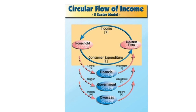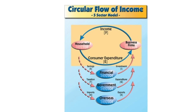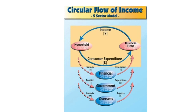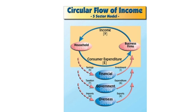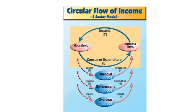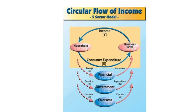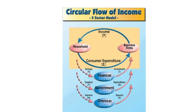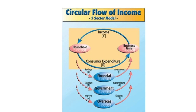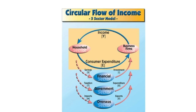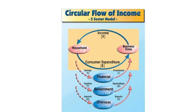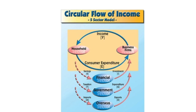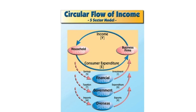Investment can mean countries such as China giving loans and things like that. The second injection is government expenditure — the money the government puts back in through spending. The last injection is exports: when we sell goods abroad, like Germany selling cars to Italy, Italy gives us money, meaning more money in our economy and more jobs.